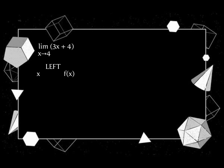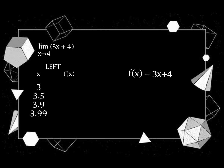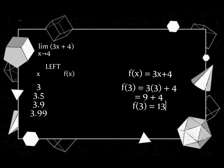We will start from the left. For x, we have 3, 3.5, 3.9, and 3.99. To get f of x, we need to substitute the values of x in our equation. f of x is equal to 3x plus 4. It will become f of 3 is equal to 3 times 3 plus 4. Evaluate, and then we get 13.